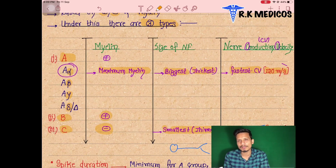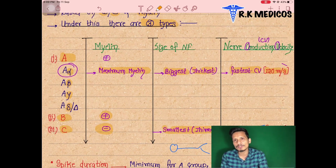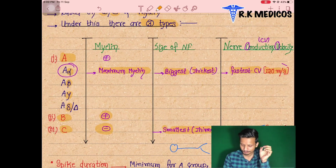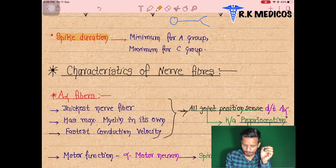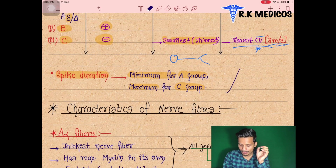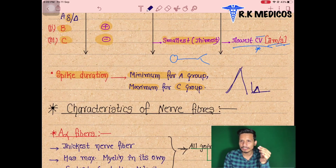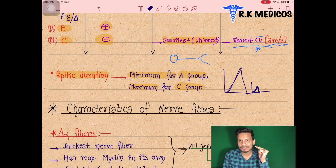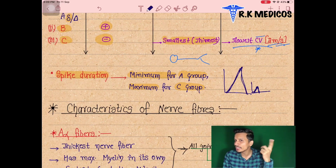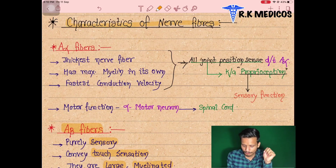This is much higher than the Type C fiber speed of 2 m/s — here it is 120 m/s. Type B fiber is also myelinated but we will not detail its speed here. To summarize: Type A is divided into four parts, B and C each stand alone; C is the slowest at 2 m/s and Type A fastest at 120 m/s. Regarding spike duration — it is minimum for Type A and maximum for Type C. A fibers reach their peak very quickly, showing a small fast spike, while C fibers are slow and show a larger, higher peak.